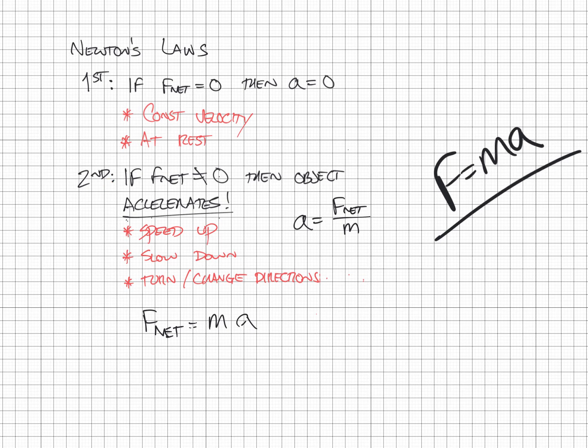Newton's second law: if F_net is not zero, then an object will accelerate. It accelerates using F = ma. Solving for a, we get a = F_net / m. It's the net force that causes acceleration, meaning it can speed up, slow down, or change directions.